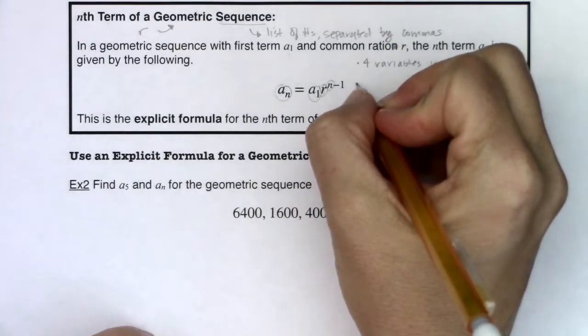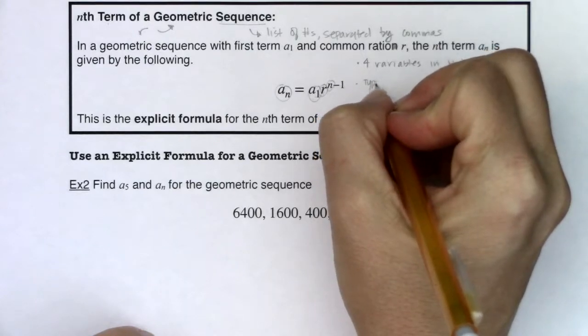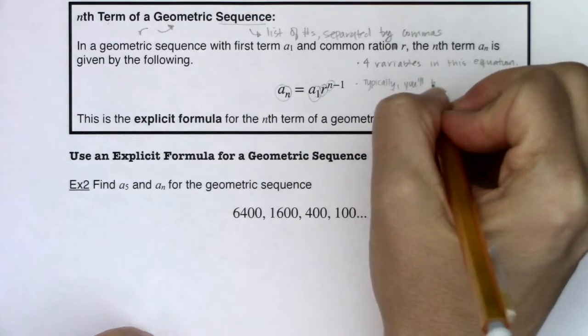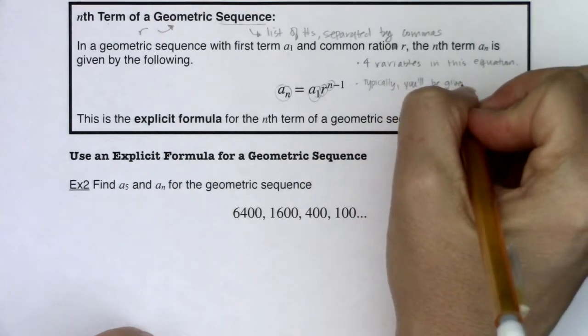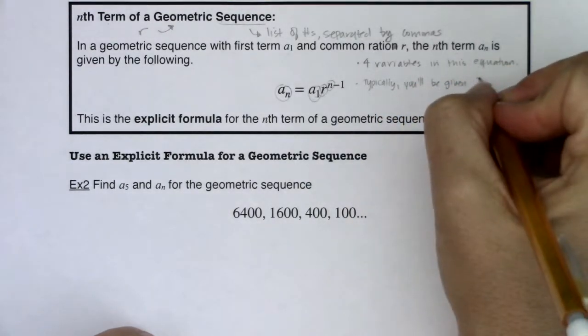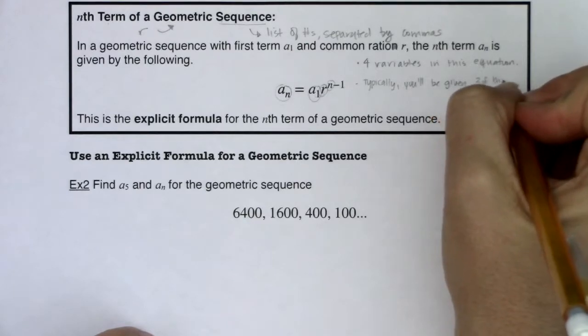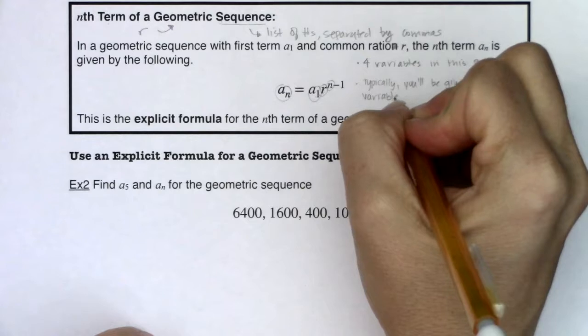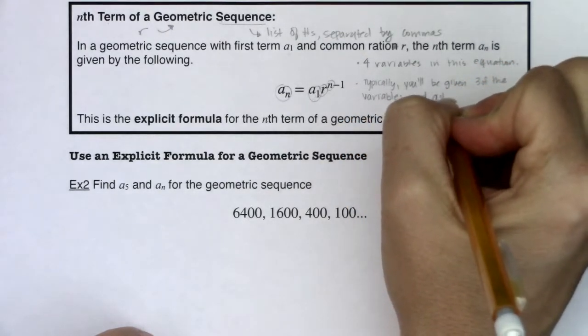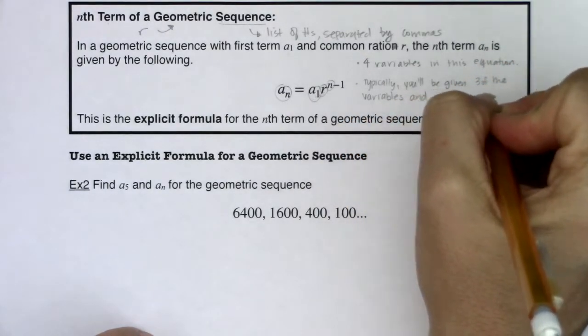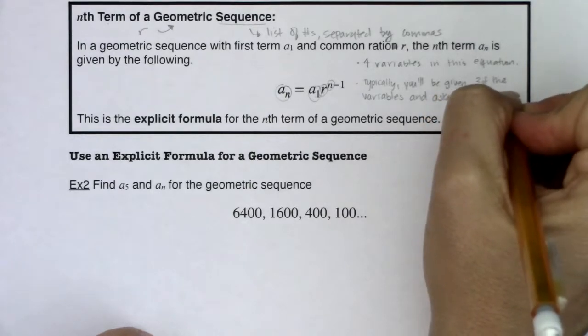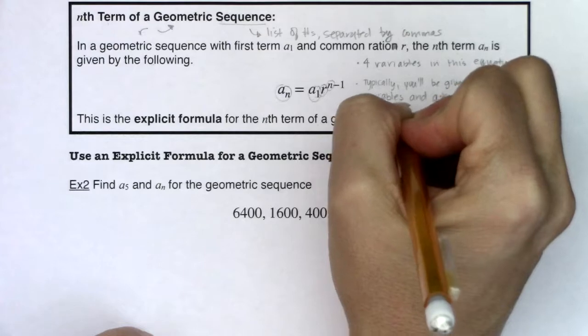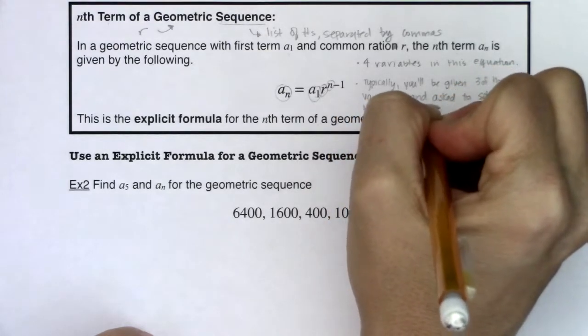You'll definitely want those two as you float through these problems. But typically, you'll be given three of the variables and asked to solve for the fourth.